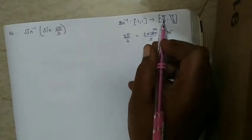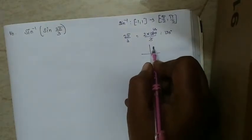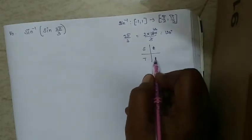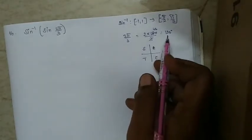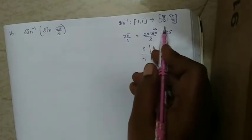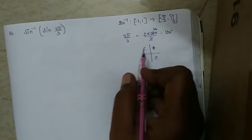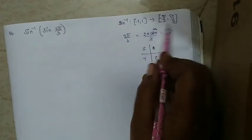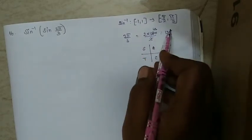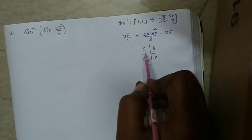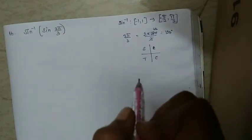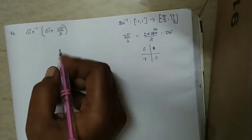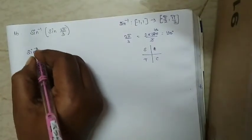Now 120° does not lie in the range [−π/2, +π/2]. In the second quadrant, sin is positive. So we convert 2π/3 using the identity sin(π−θ) = sin θ. We rewrite 2π/3 as π − π/3, so sin(2π/3) = sin(π − π/3) = sin(π/3).